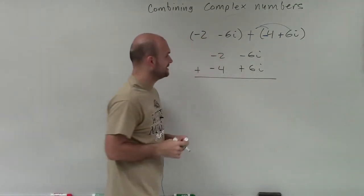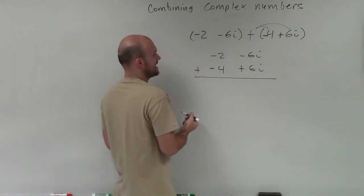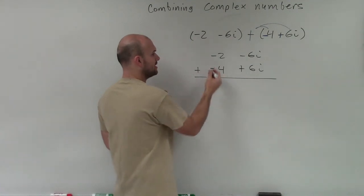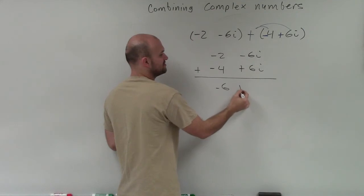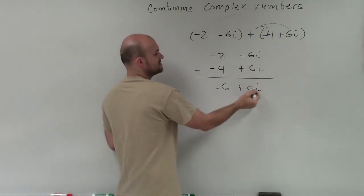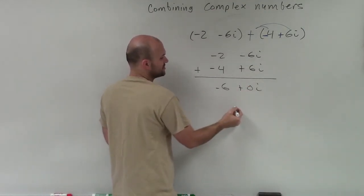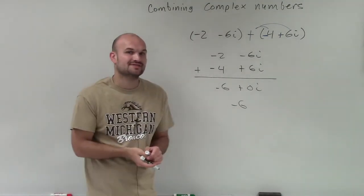So now, by applying this, I have negative 2 plus negative 4 is going to be negative 6. And then negative 6i plus positive 6i is just going to be 0i. Well, 0 times i, we know, is going to be 0. So my final answer is just going to be a negative 6.